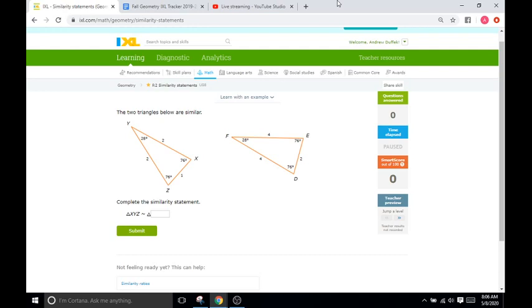We go to our second triangle and see that E is going to be similar to it, so X is similar to E. Since X is the first letter in your similarity statement on the left side, E has to be the first letter on the right side.